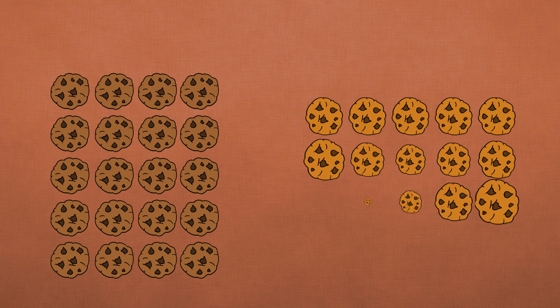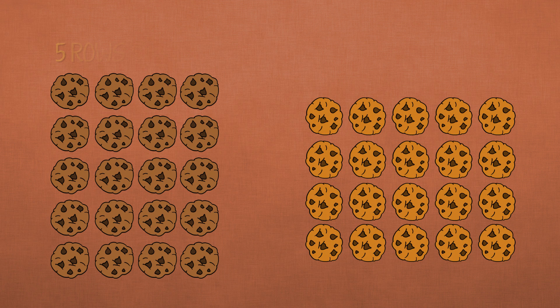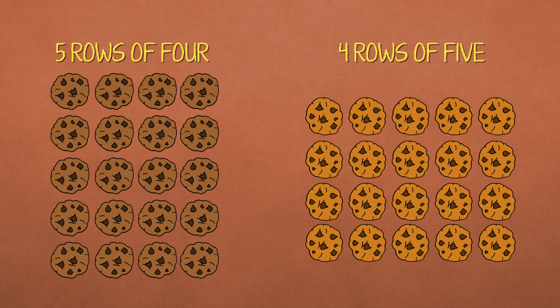Hello again. Today we're going to look at some counting tricks, but first, check this out. Which is bigger? This array of five rows of four cookies, or this array of four rows of five cookies?